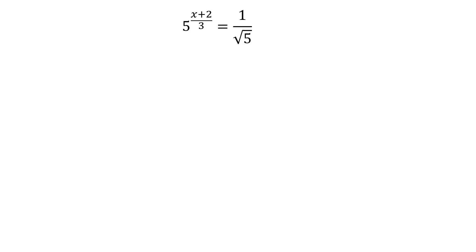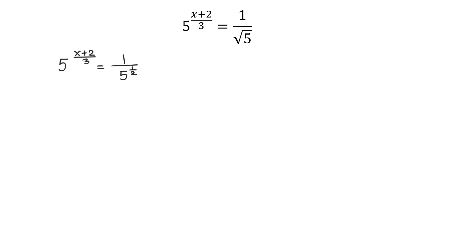Now let's see the next equation. Here we have 5 to the x plus 2 over 3 equals 1 over square root of 5. On the left side we see the base 5, so let's see if we can rewrite the right side also using the base 5. In the first step we will write square root of 5 as 5 to the exponent 1 half. So on the left side we will have 5 to the x plus 2 over 3, and on the right side 1 over 5 to the exponent 1 half. In the next step we will move this expression up to the numerator and the exponent will become negative, giving us 5 to the x plus 2 over 3 equals 5 to the negative 1 half.